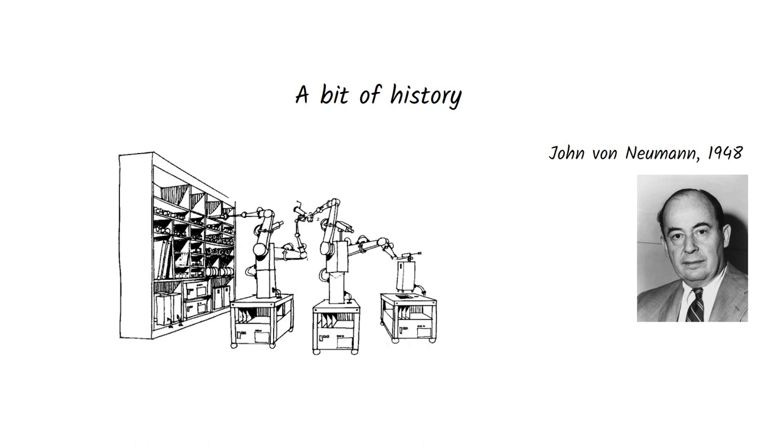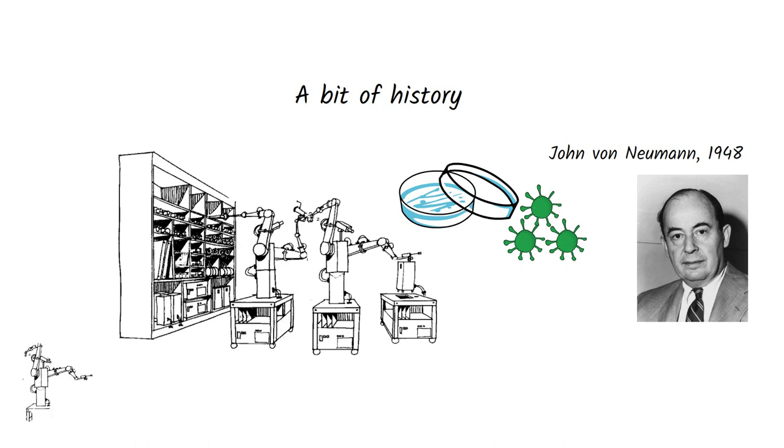Neumann was fascinated by how bacterial cultures grow in petri dishes. Suppose we have a difficult task to perform. We build a robot that will carry out this task. But one robot, to perform such a complicated task, will have to be complicated itself. And the process of building it will also be complex. And when we finish building it, we will have only one robot. It won't scale, as we would say today.